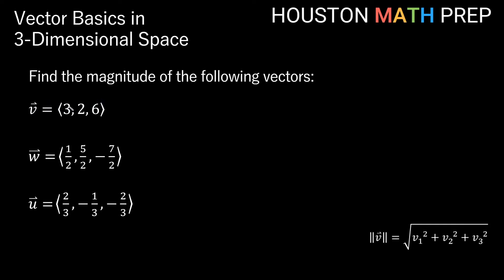Let's do a few examples where we find magnitudes of vectors. Our first vector here is 3, 2, 6. So our magnitude of vector v is going to be the square root of 3 squared plus 2 squared plus 6 squared. So that will give us the square root of 9 plus 4 plus 36. That will then give us the square root of 49. And it turns out this vector is exactly 7 units long. It has magnitude 7.